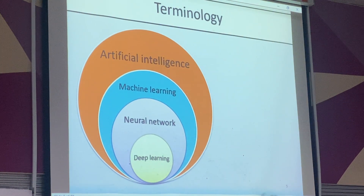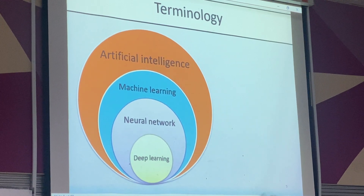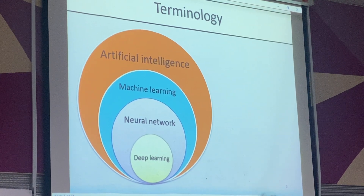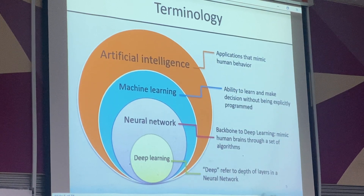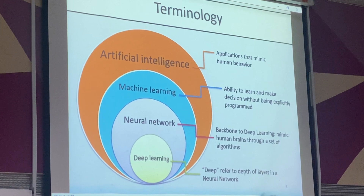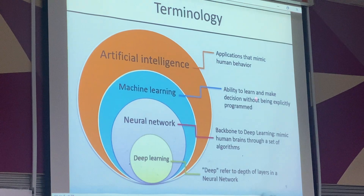There are some terminologies to understand first. You've probably heard of machine learning, deep learning, neural networks, and AI — so what are the differences? Artificial intelligence is like the big umbrella — it refers to any applications that mimic human behaviour. Under AI, we have a subset called machine learning, which is the ability to learn from past historical data, discover patterns, and make decisions without being explicitly programmed.